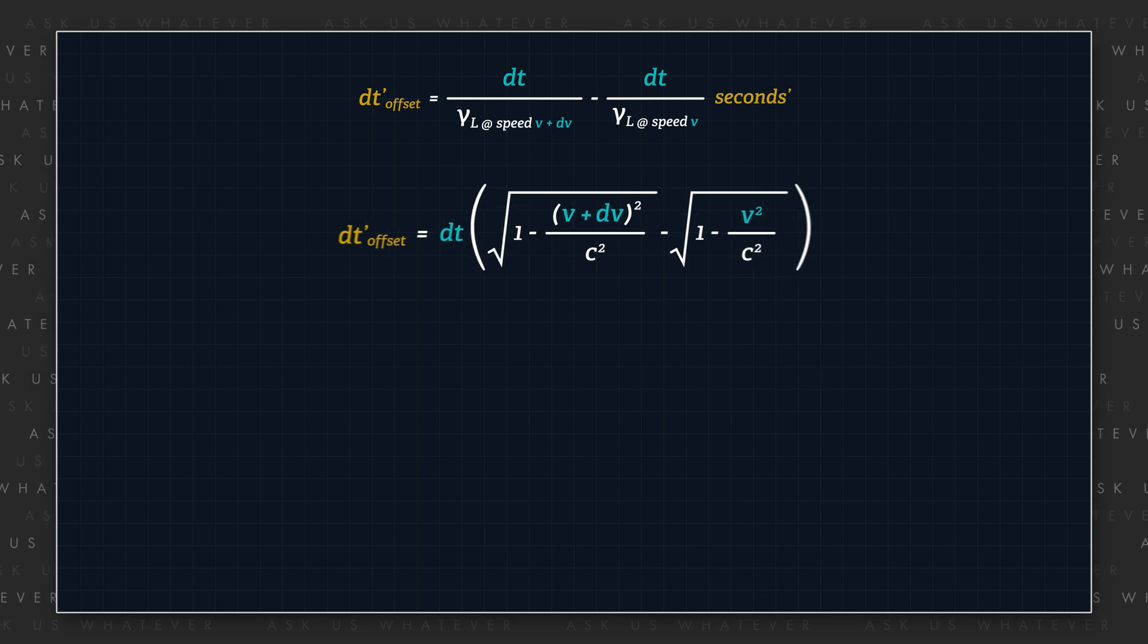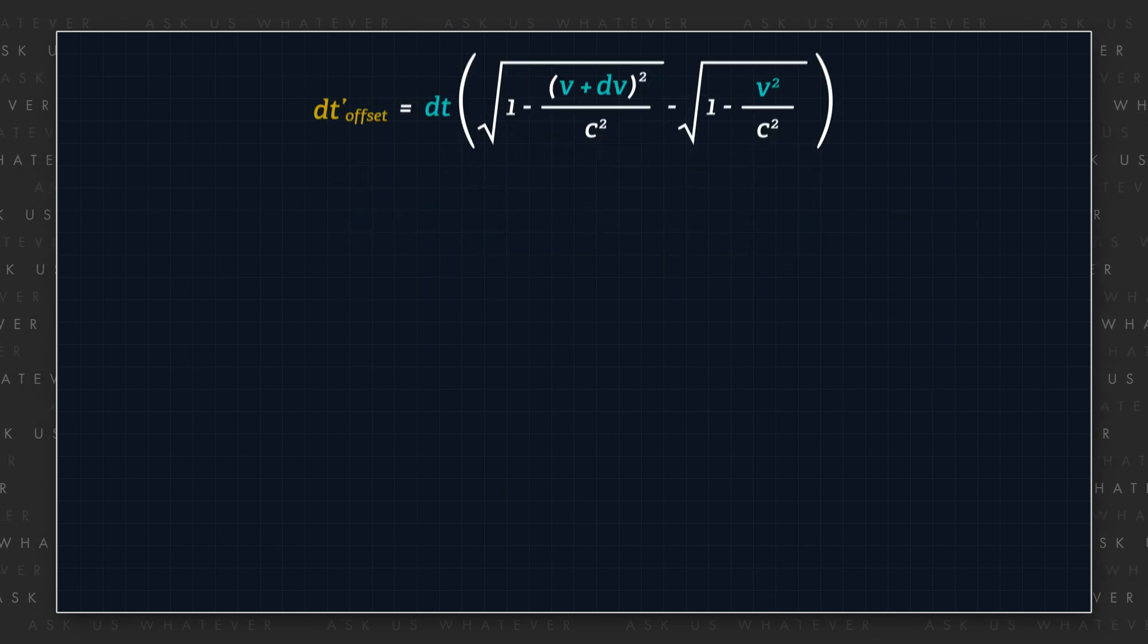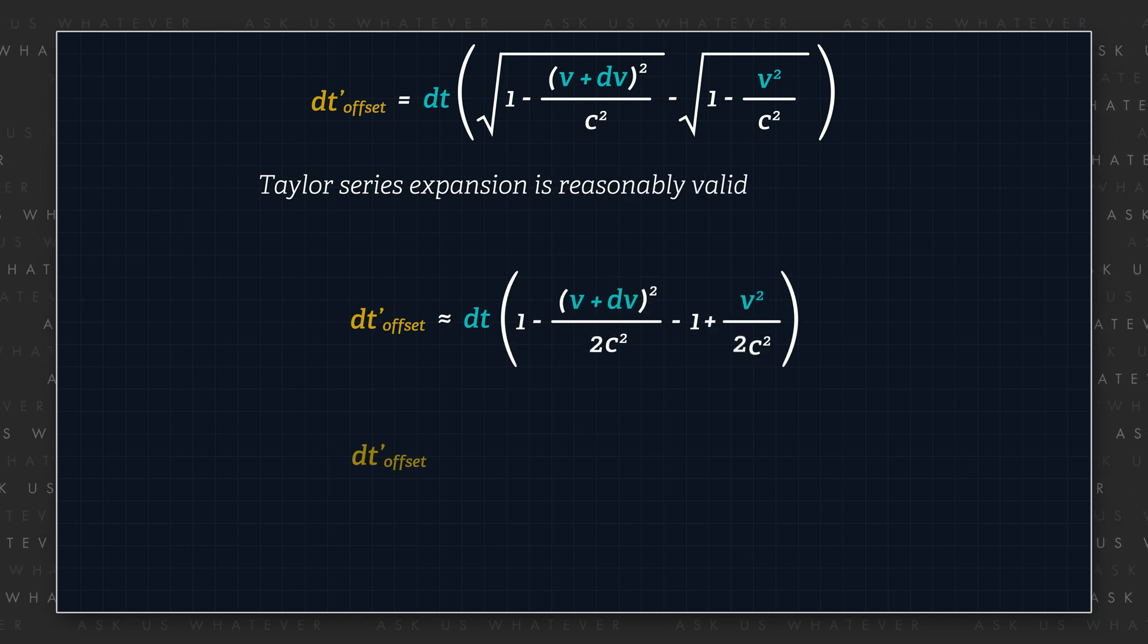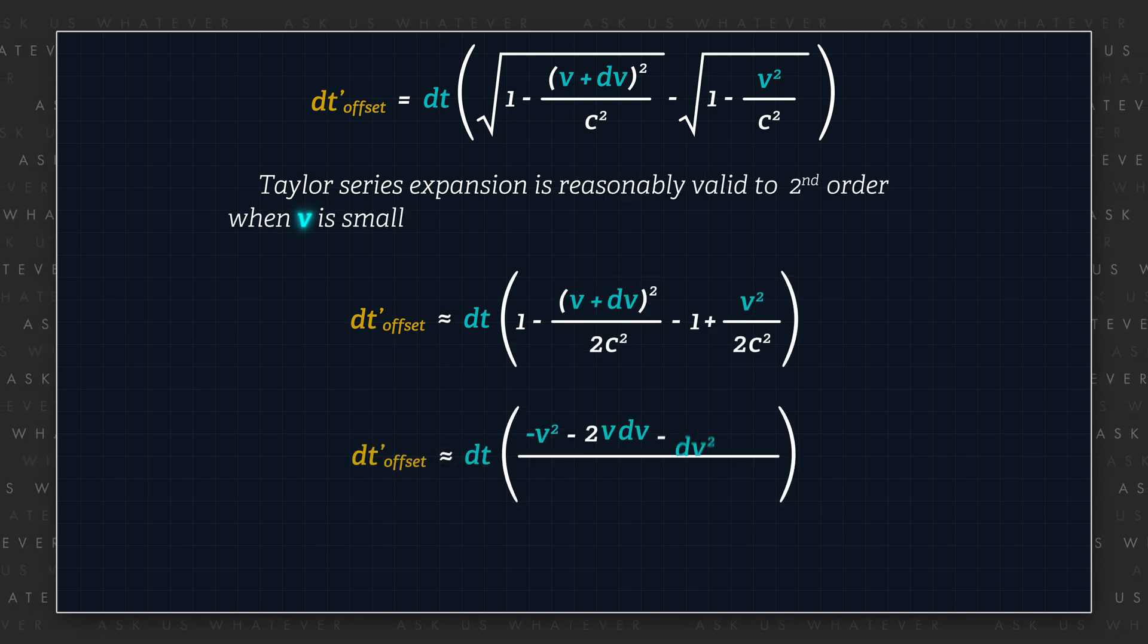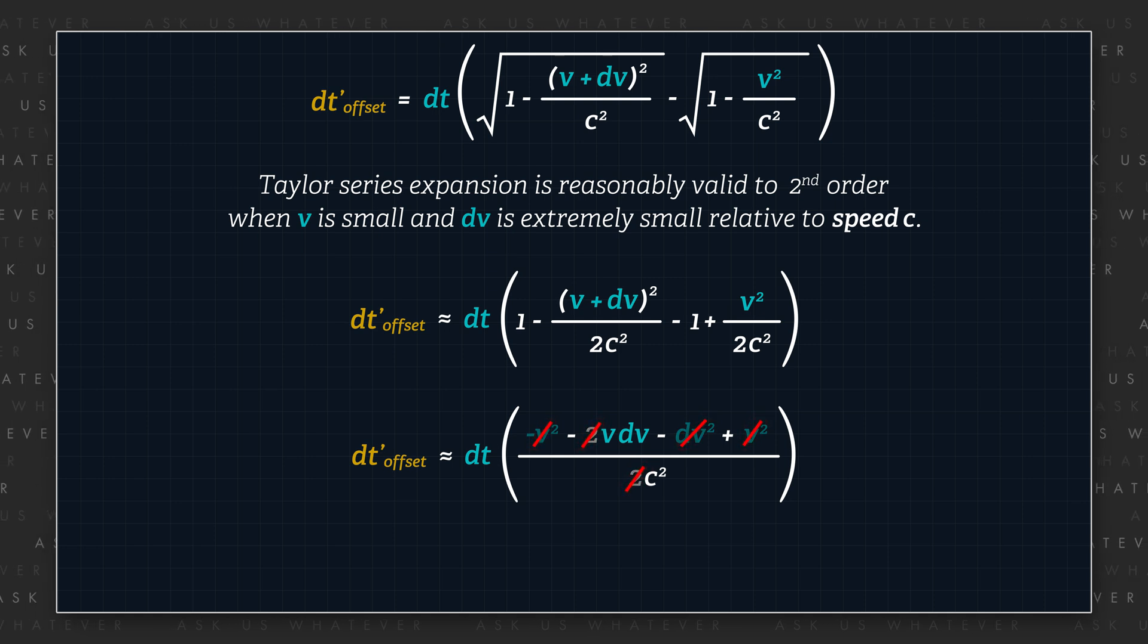Now this is a difficult equation to solve exactly because of the square roots, but we can approximate it algebraically by expanding the square root terms using Taylor series expansion, which is reasonably valid to second order when V is small and DV is extremely small relative to speed C.